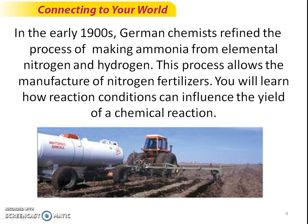In the early 1900s, German chemists refined the process of making ammonia from elemental nitrogen and hydrogen.